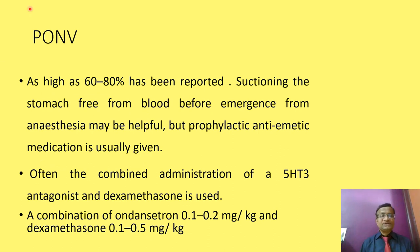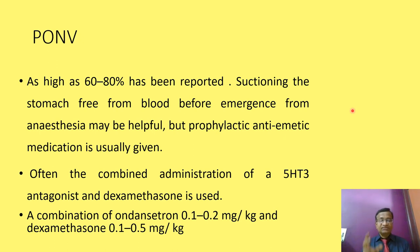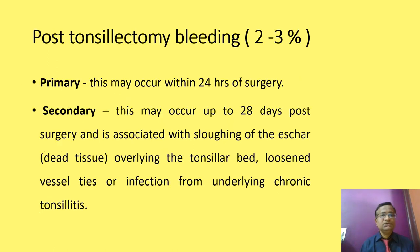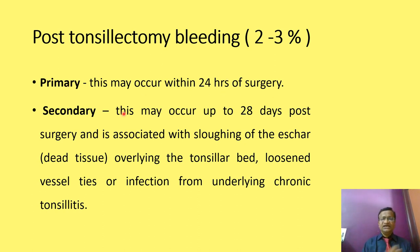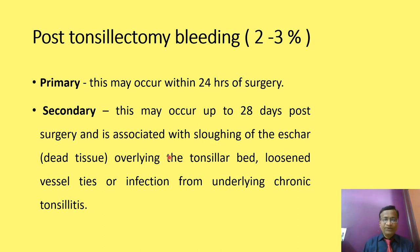PONV occurs in 60 to 80 percent of tonsillectomy patients. Using ondansetron, dexamethasone, and sometimes ondansetron combinations can reduce PONV from 60 percent to approximately 6 percent. Post-tonsillectomy bleeding is 2 to 3 percent: primary bleeding is within 24 hours, secondary bleeding is up to 28 days, and there may be reactionary bleeding as well.